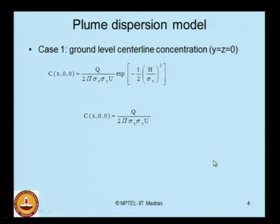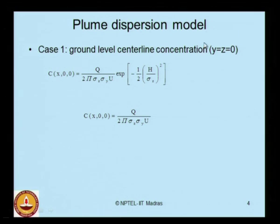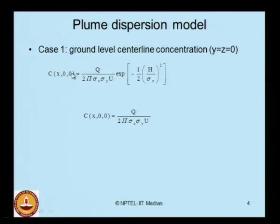Looking at different cases of the plume dispersion model: Case 1 is the ground level central line concentration, where y and z are taken as 0. Substituting these variables and dispersion coefficients into the previous expression gives concentration in terms of x alone, since the crosswind and vertical directions are taken as zero. So C(x) is given by this expression.